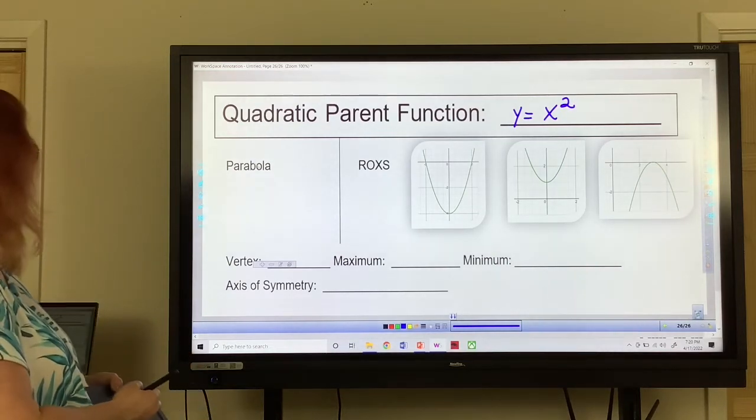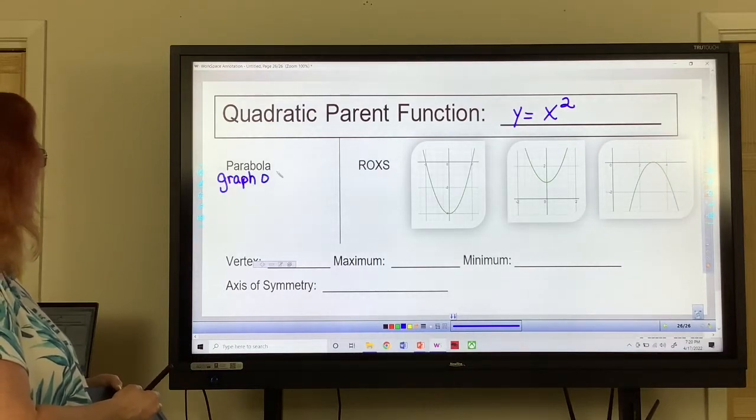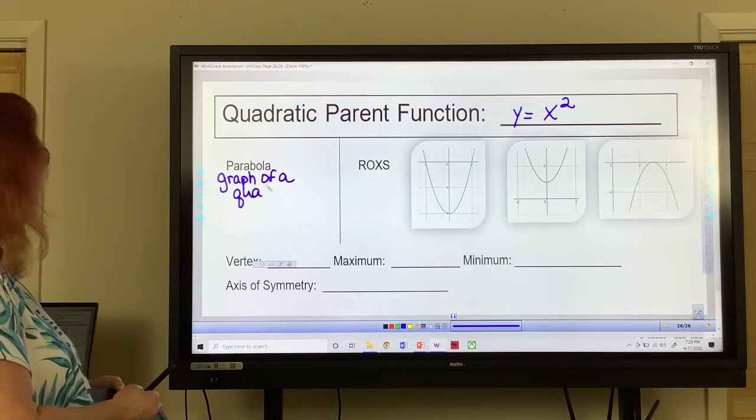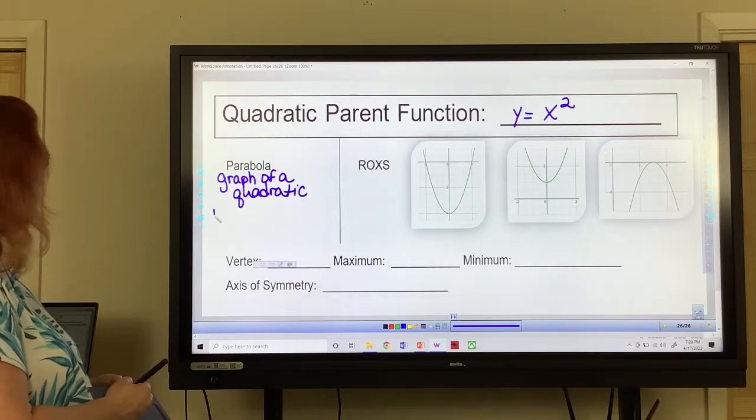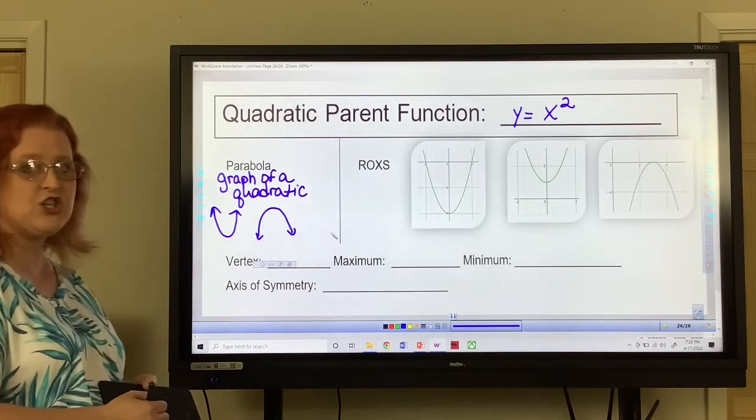Parabola is just the graph of a quadratic. It's either going to open up, it's a U shaped, or it's going to open down and it's the upside down, the N shape.